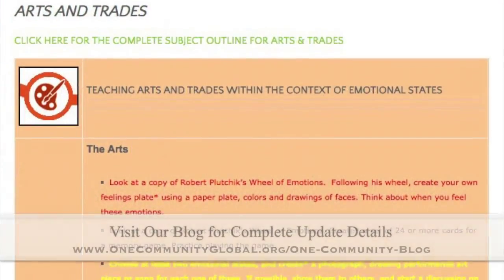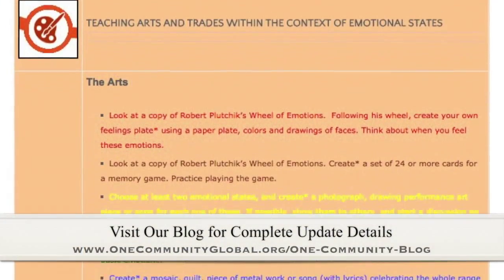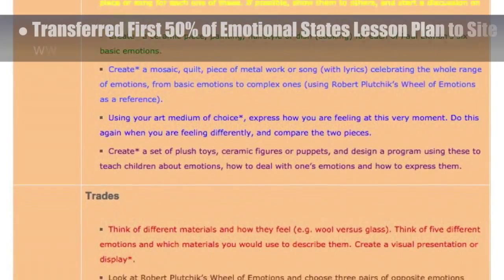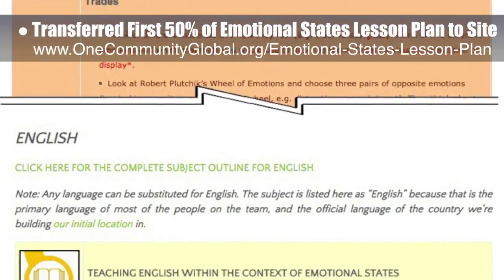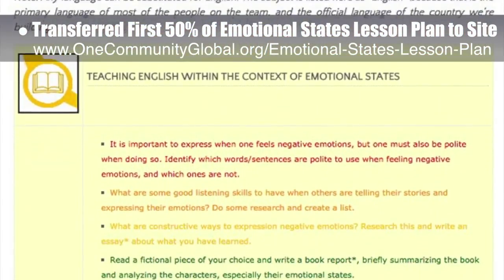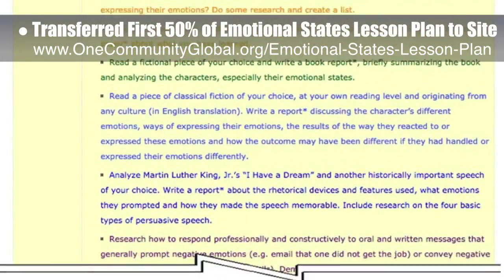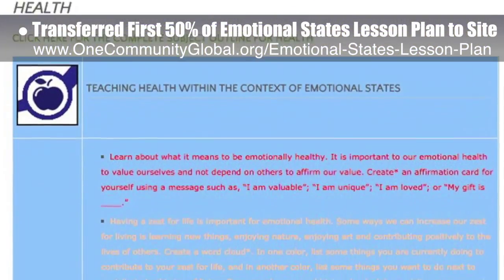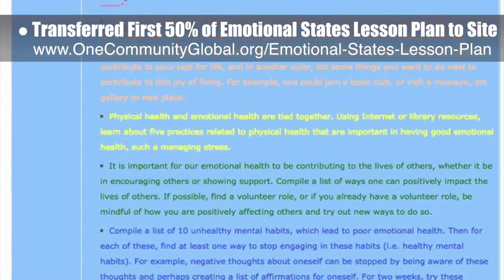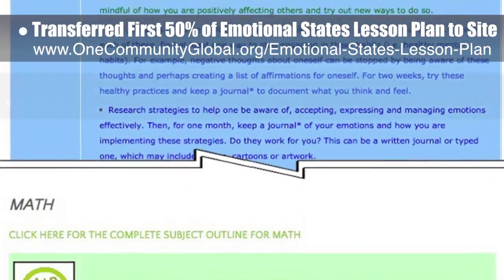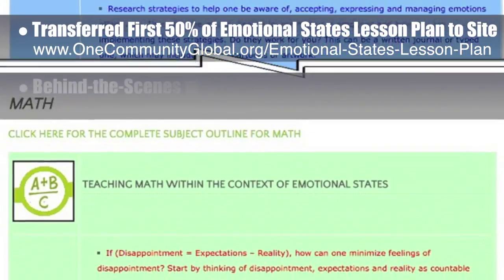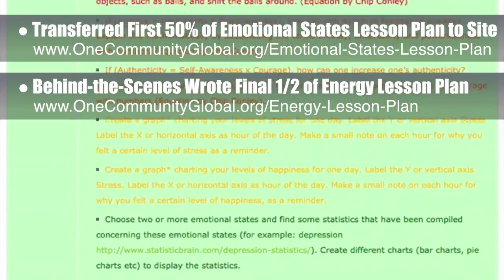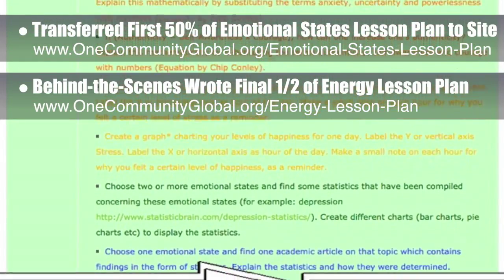This week the core team — which includes the Pioneer members plus those helping who don't wish to be individually acknowledged — transferred the first 50% of the written content for the Emotional States lesson plan to the website. This lesson plan is purposed to teach all subjects to all learning levels in any learning environment using the central theme of Emotional States. Behind the scenes, we also wrote the final one-half of the Energy lesson plan, bringing the written part of that to 100% complete.